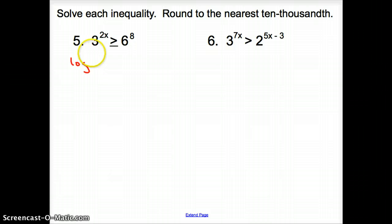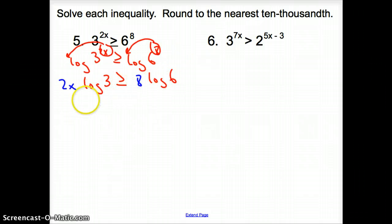Now we have log of 3 to the 2x is greater than or equal to log of 6 to the 8th. When we take the log, both of the exponents have to come in front. So now we have 2x times log of 3 greater than or equal to 8 times log of 6.